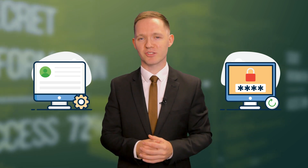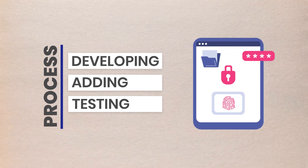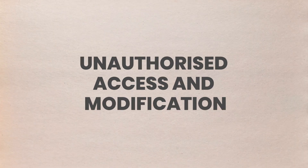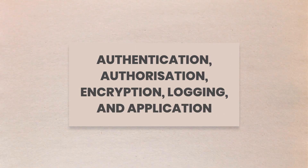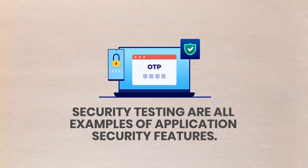Now, let's talk about application security. Think back to whenever you tried to log in to your social media or bank account — you had to input your login information like ID and a password. This is a form of application security. Application security is the process of developing, adding, and testing security features within applications to prevent security vulnerabilities against threats such as unauthorized access and modification. Authentication, authorization, encryption, logging, and application security testing are all examples of application security features. Your company most probably requires you to go through some sort of application security when you access their assets.